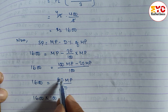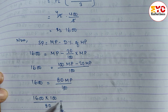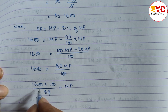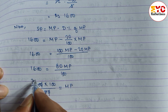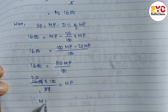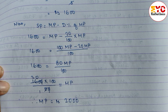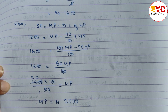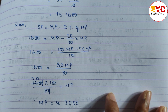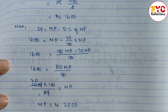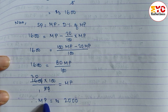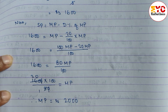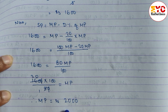Subtracting: 100 minus 20 gives 80MP. So 1600 = 80MP/100. Cross multiplying: 1600 × 100 divided by 80 equals MP. Cancelling zeros: 16 × 100 / 8 = 2000. Therefore MP is equal to Rs.2000. The marked price is 2000.